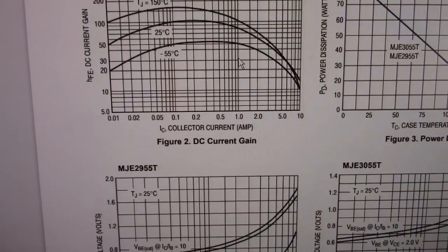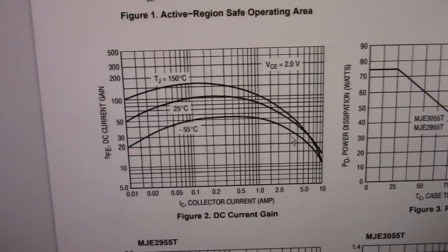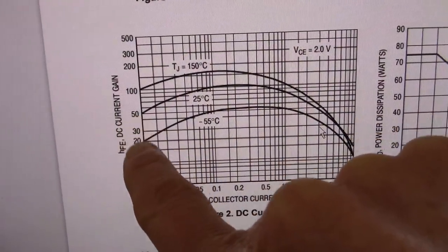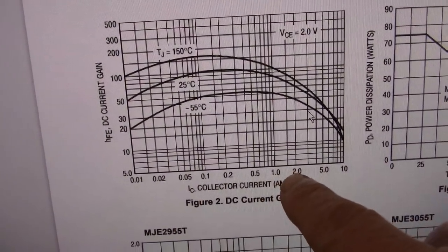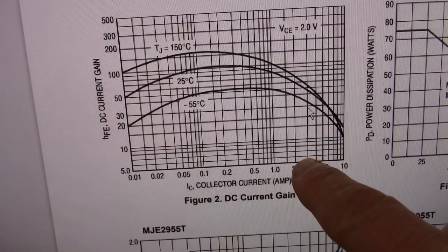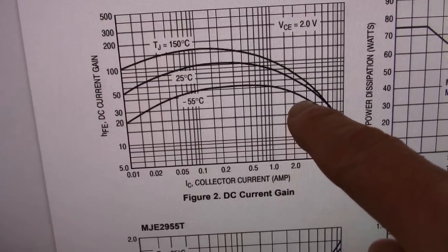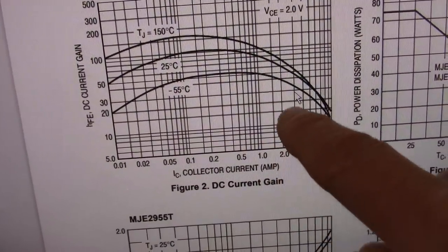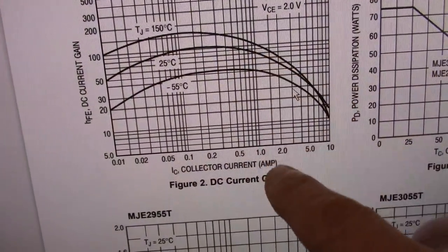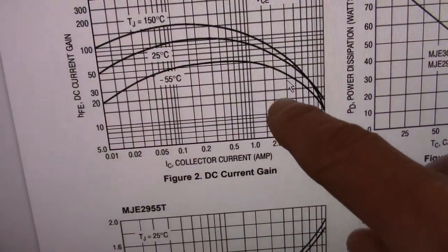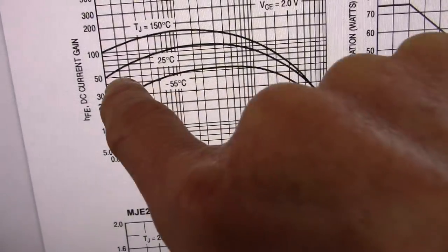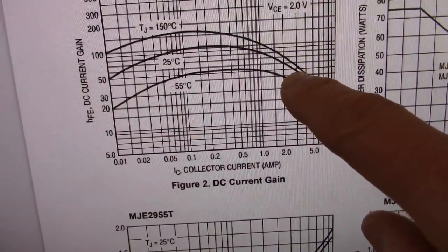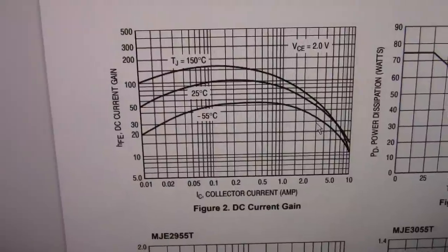So DC current gain. So yeah we'll use that. So yeah this is current. We find the 3 amp line which is that. And we go up to... I'm going to ignore negative 55. I don't care about that. This is a more normal operating temperature. So 3 amps. That's the 40. So it's above that. It's between 40 and 50, 45 I would say. We'll just say 40. So it has a gain of 40.